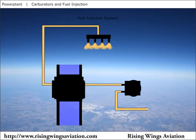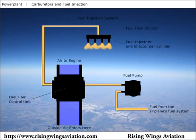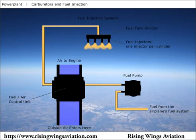A fuel injection system uses a fuel injection pump to supply fuel under pressure to a fuel-air control unit. This unit meters fuel and air to the engine according to the throttle and mixture control settings. The metered fuel then flows to the fuel flow divider, which splits the fuel equally among the cylinders. Each cylinder has its own fuel injector, which vaporizes the fuel just prior to the cylinder's intake valve.